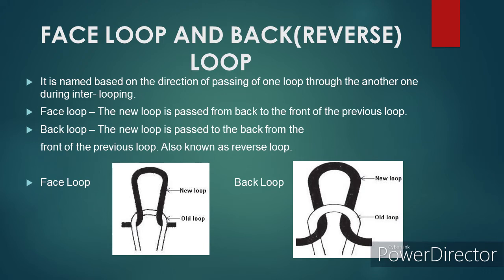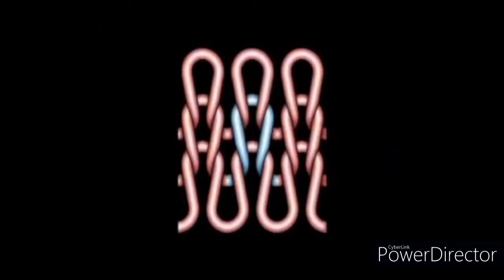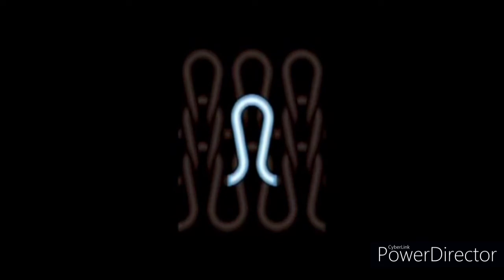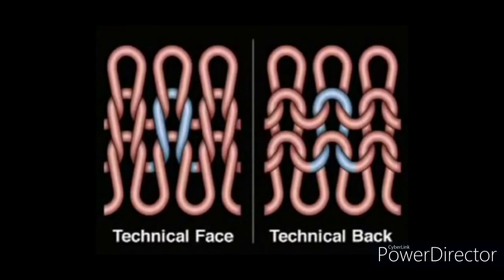To make you understand still better, I would like to explain in detail further through a small animated video. Please look closely at the loop diagram of a regular knit loop. The needle has each loop and parts of each loop can be identified as legs and a crown. The fabric at the left is technically the face side or face loop. The loops are drawn from the back to the face, and the stitches have an overall vertical appearance. In this view, you can see primarily the legs rather than the crown.